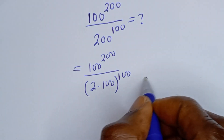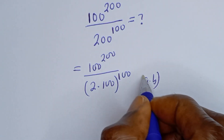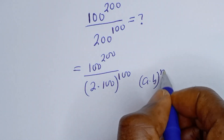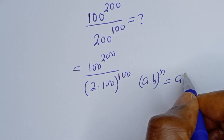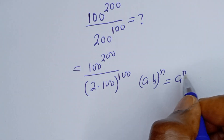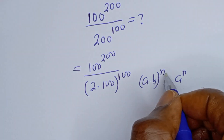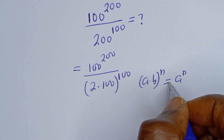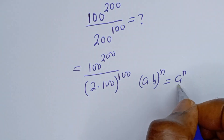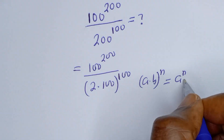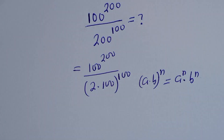Take note of this: if you have (a multiplied by b) to the power of n, this is equal to a to the power of n multiplied by b to the power of n.